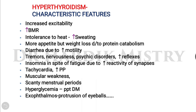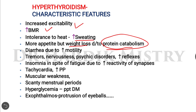The characteristic features of hyperthyroidism include: increased excitability, increased basal metabolic rate, intolerance to heat with increased sweating, increased appetite, and weight loss due to protein catabolism caused by elevated thyroid hormones.